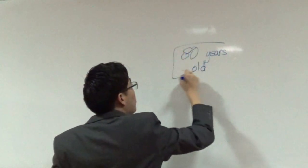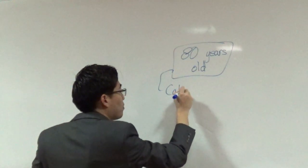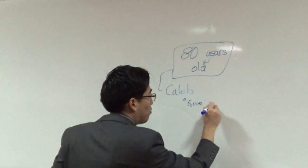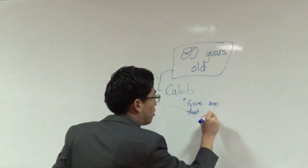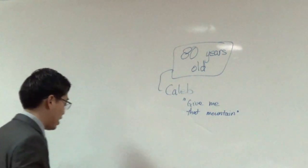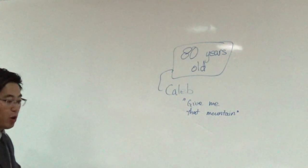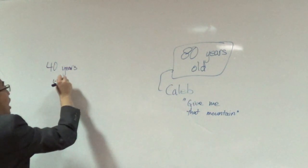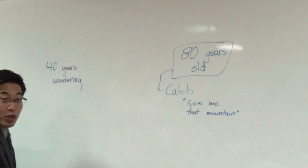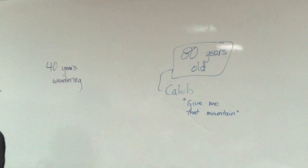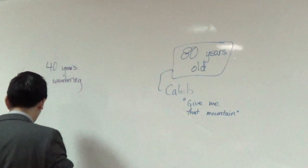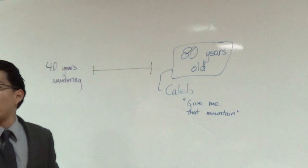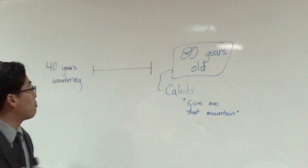So from 80 years old, I'm going to assume here Caleb told Joshua give me that mountain, right? There's a dilemma - remember him and Joshua and Moses wandered in the wilderness for 40 years. Now this guy must be ancient or something, or maybe he was a kid when this happened and then there's this time gap, correct? So in total there's a time gap.